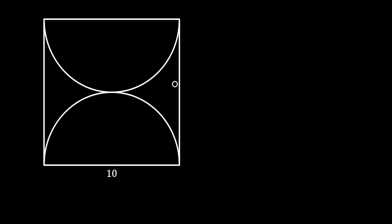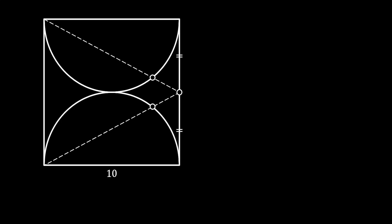Next, from the midpoint located on the right side of the square, we are going to pull a line to the upper left corner of the square. And we will mark the point of intersection between this line and the upper arc of our half circle. Next we will do the same thing on the bottom part — we are going to pull the line to the bottom left corner of the square, and we will again mark the intersection point between this line and the bottom arc of our half circle.